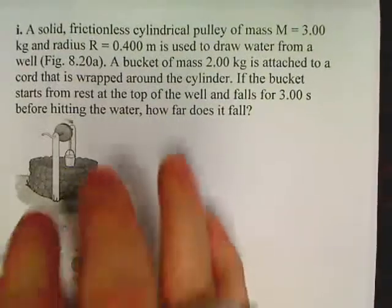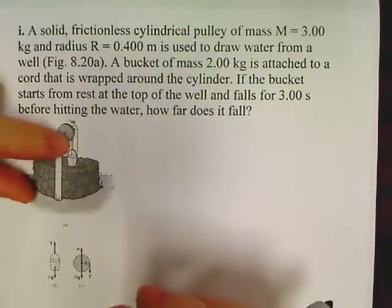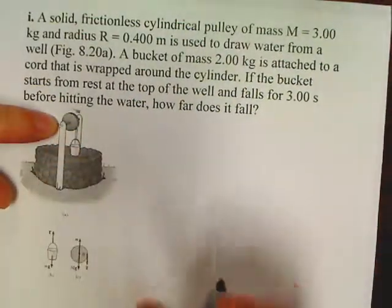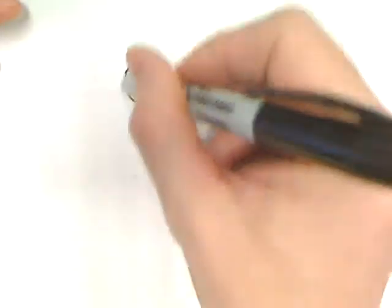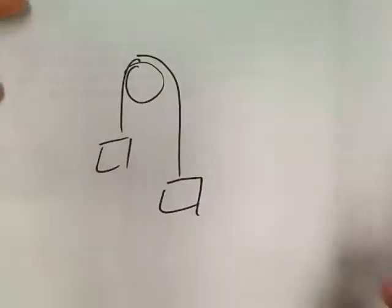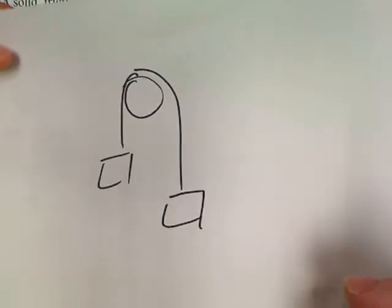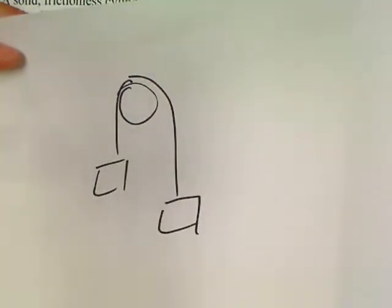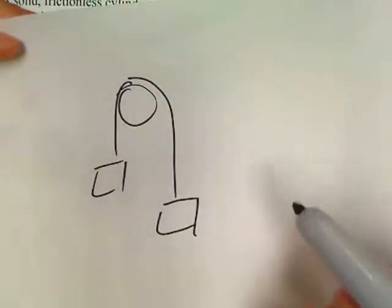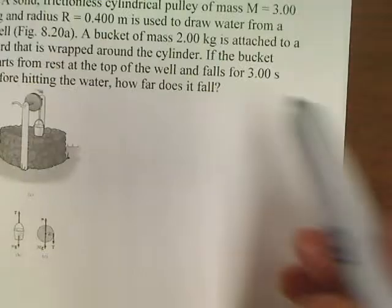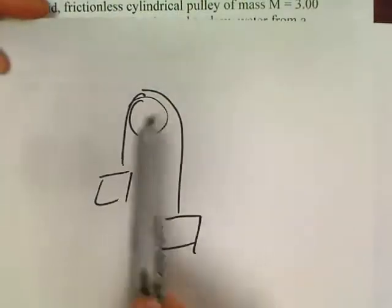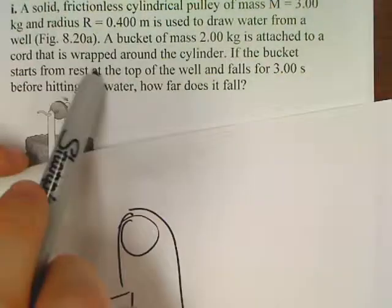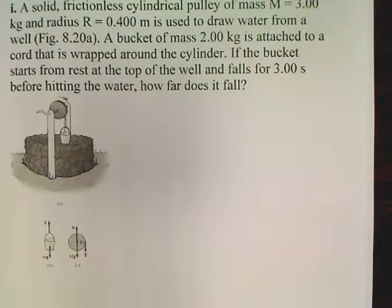One more problem — the well bucket question. This is a connected-object problem you're almost guaranteed to see. You've done these before with a pulley and weights on each side. The new twist is combining rotational torque with that old connected-objects setup. Some teachers — and I'll do this for bonus questions — will combine both concepts.